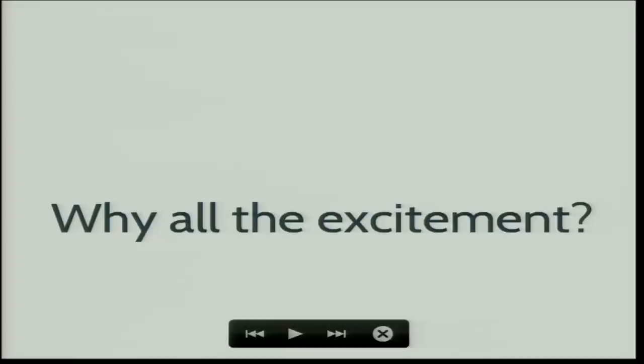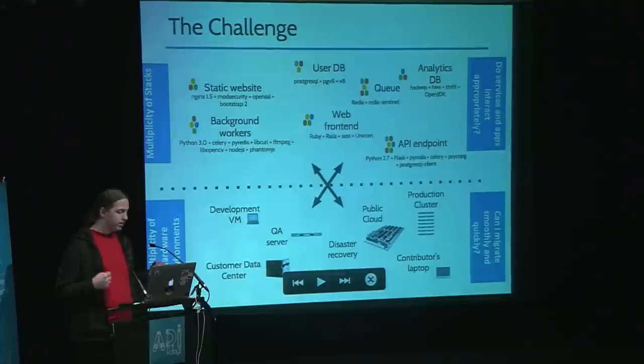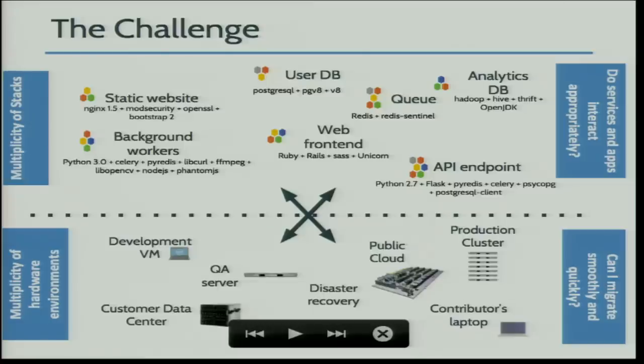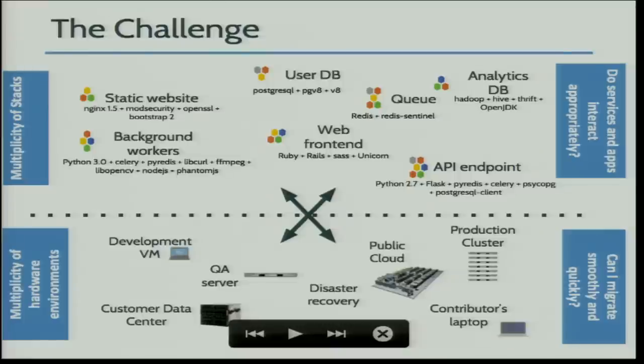Why all the excitement? That's a legitimate question. If you work in a company, there's a good chance your stacks look like that — a lot of different applications, all with different software stacks and different library dependencies. And you also have a lot of targets: your development VM, your QA server, your production staging, the public cloud on Amazon or OpenStack. And all these platforms are different, even if you have Linux on all of them.